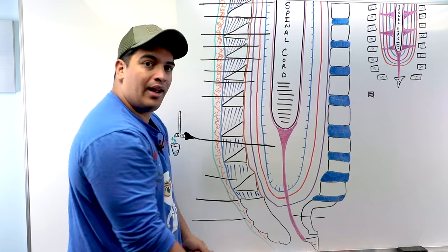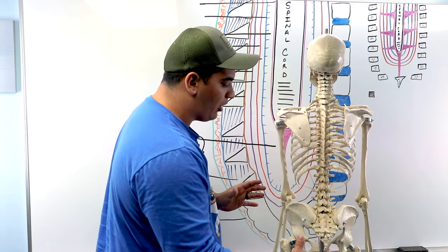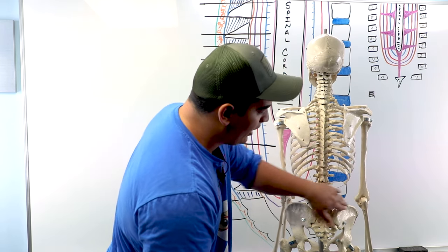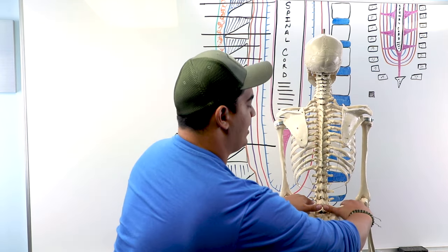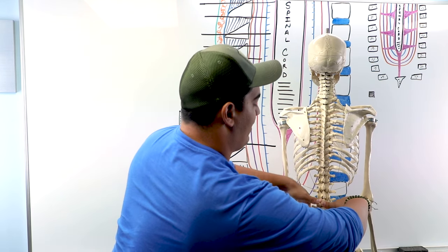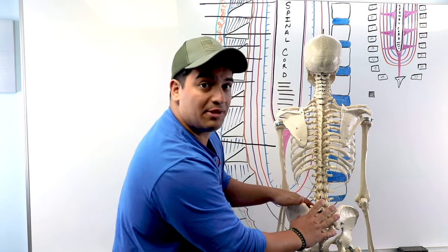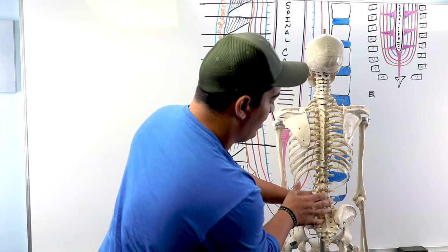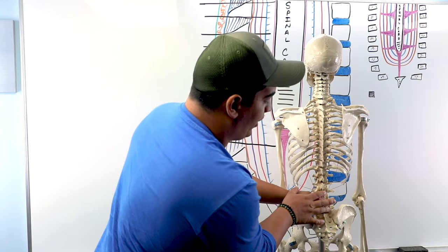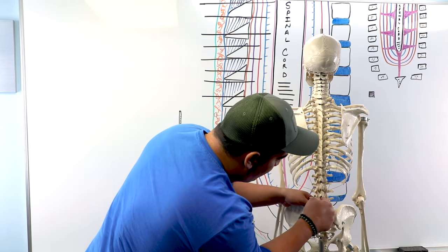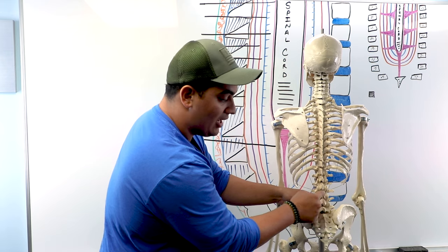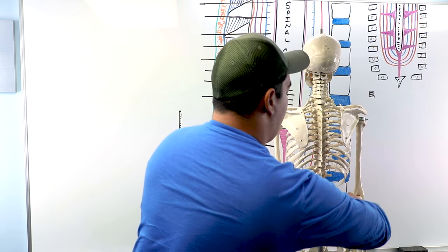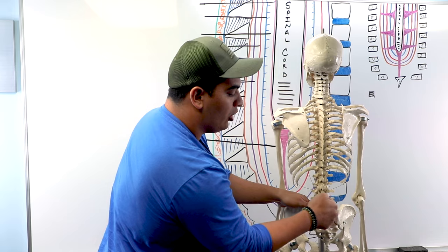Instead of counting all the way down the vertebrae, use your landmarks. You have these bony ridges — your iliac crests. If you come from the midline along the top of both iliac crests and place your fingers in the middle, you're going to be around the L4 spinous process. Then palpate above that — that's L3. When you stick your spinal needle in, you're inserting it between those two vertebrae, in that L3-L4 interspace.